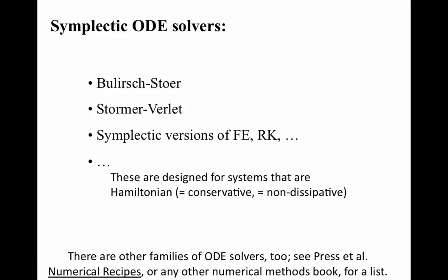There are also special solvers for conservative systems — systems that have no friction, like orbits of bodies in the solar system, such as planets or spacecraft. These are called symplectic solvers. They calculate the energy at each step, and if they see that energy is not being conserved, they add or subtract a little back in to make it balance. Now, that's not quite right, but it gives you the idea.